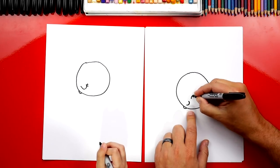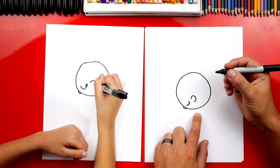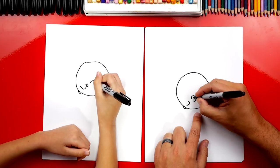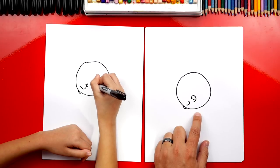Now let's draw a C shape, backwards C for the ear. Then we can also add a little line inside for the inside of the ear. There we go.